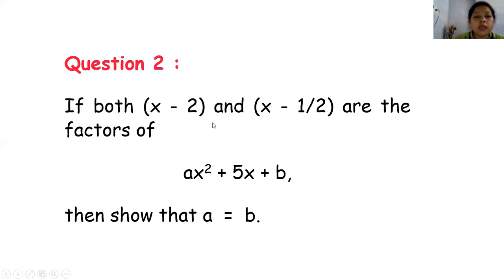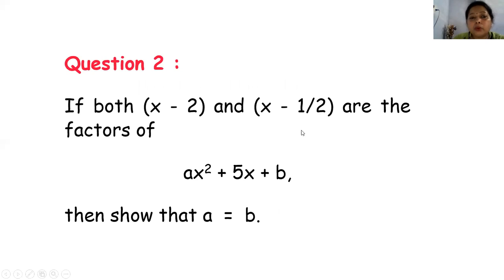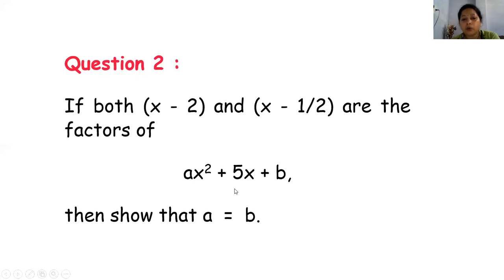Question 2: if both x minus 2 and x minus 1/2 are factors of this polynomial, then show that a equal to b. तो यहाँ पे कह रहा है कि x minus 2 and x minus 1/2 both are factors. यानि दोनों से यह जो polynomial है, given polynomial है, दोनों ही factors से divisible होगा — दोनों ही से exactly divisible होगा, उस case में हमारा remainder 0 होगा.